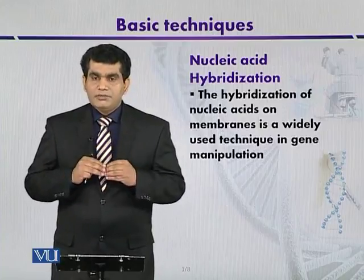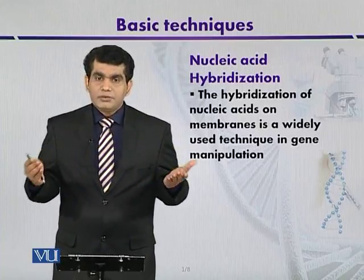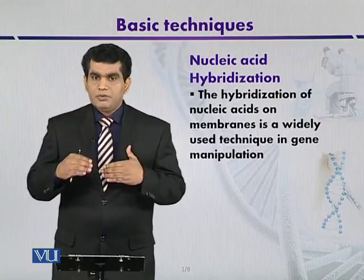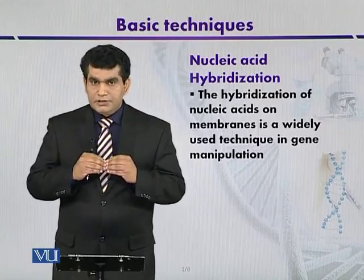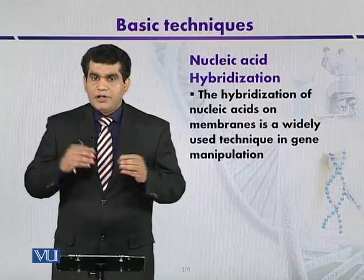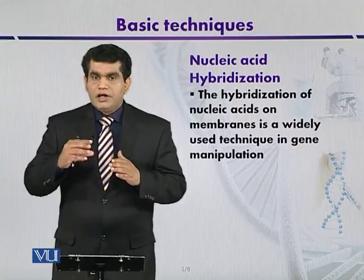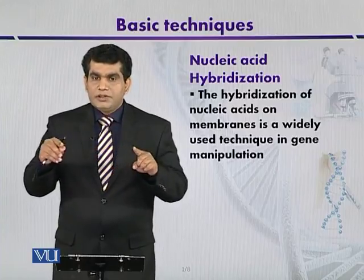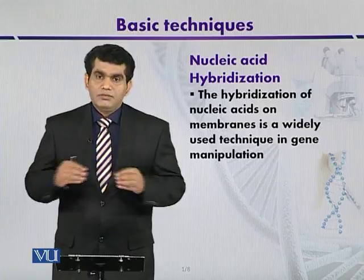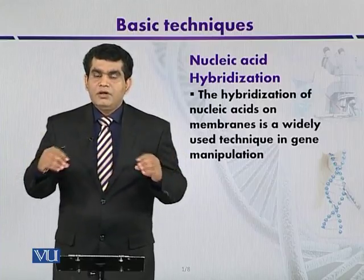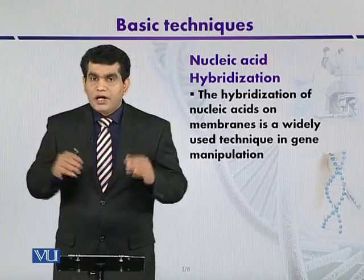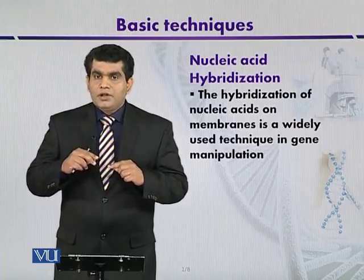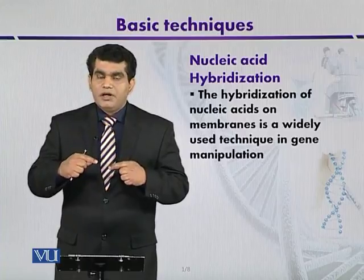After immobilization of the DNA on a solid support like a nitrocellulose membrane or nylon membrane, such nucleic acids can be used for hybridization experiments. We perform hybridization experiments when we have a DNA fragment immobilized from cells whose sequence is known — it is our gene of interest and it is well characterized, meaning we know how many base pairs are there and what their sequence is. To detect this sequence, we use a probe.